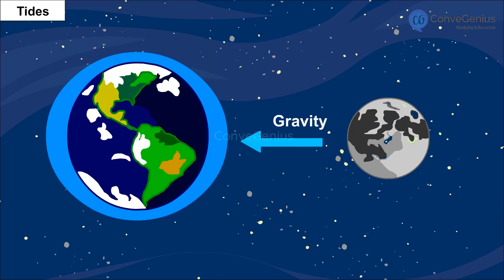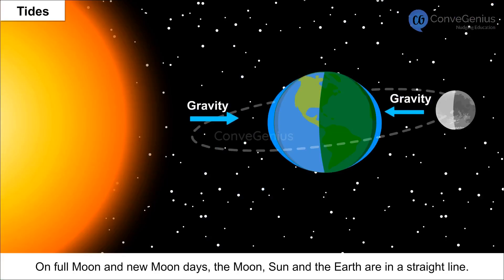This happens mainly because the sun and moon exert strong gravitational pull on the water on the earth's surface. On full moon and new moon days, the moon, sun and the earth are in a straight line.